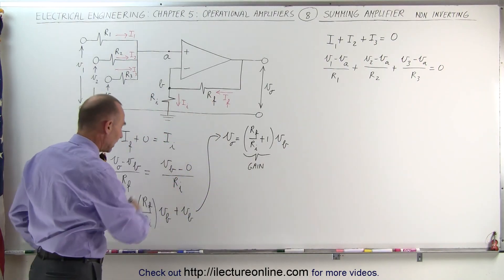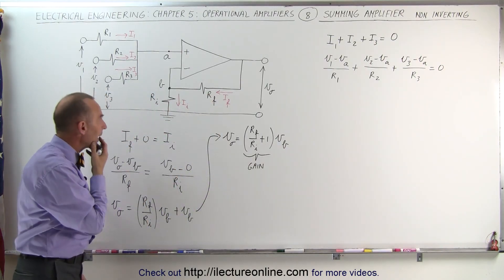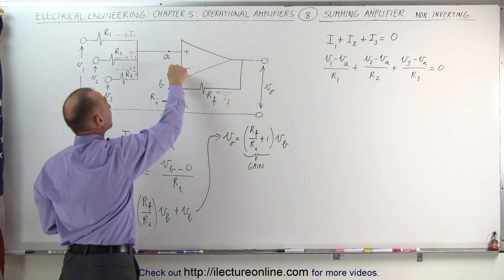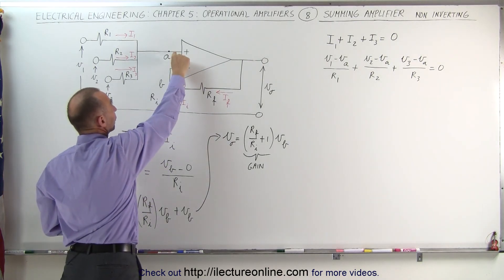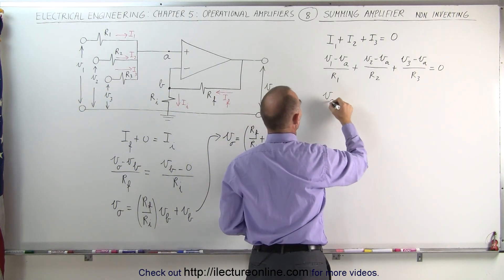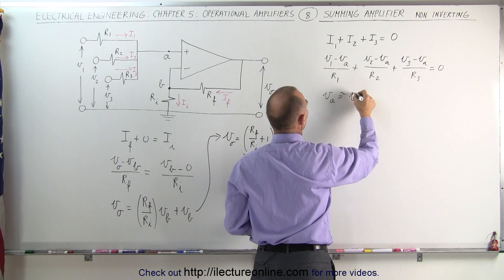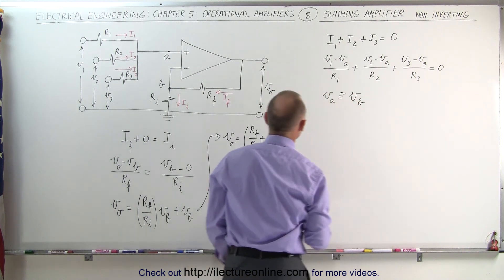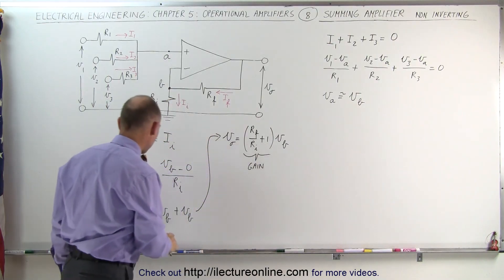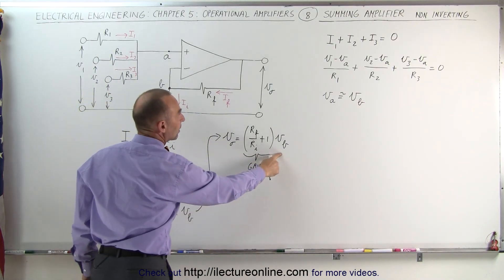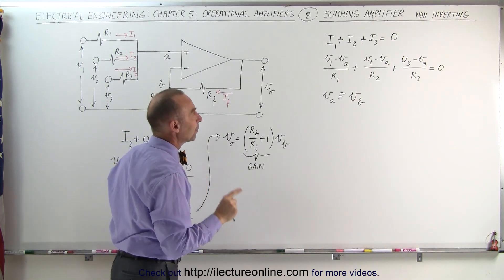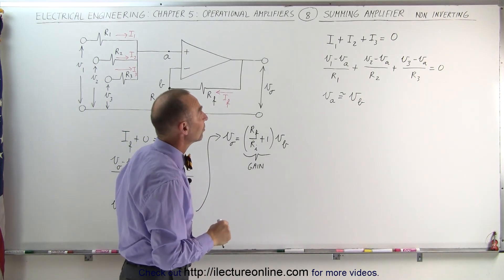Now somehow we have to connect these two equations. Remember that the voltage difference between A and B should be nearly zero, which means that V sub A is very nearly equal to V sub B. That means we can replace all the V sub A's in the junction A equation with V sub B to make the connection. So we're going to solve that equation for V sub A and then replace V sub A with V sub B.